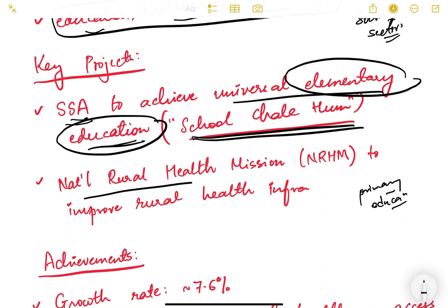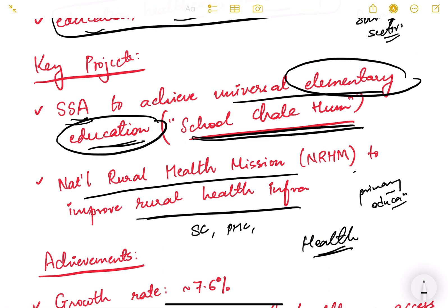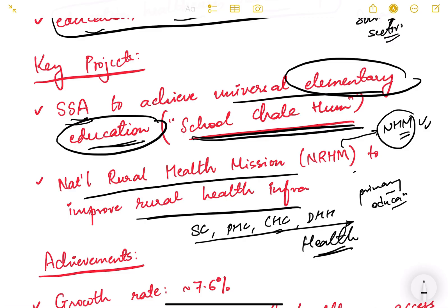The National Rural Health Mission (NRHM) was also launched during this period to improve rural health infrastructure. Previously, health was largely left to state governments with few central policies. Under NRHM, sub-centers, primary health centers, community health centers at block level, and district hospitals were strengthened. NRHM later combined with the National Urban Health Mission to form the National Health Mission (NHM), which currently provides substantial budgetary support for health infrastructure development.